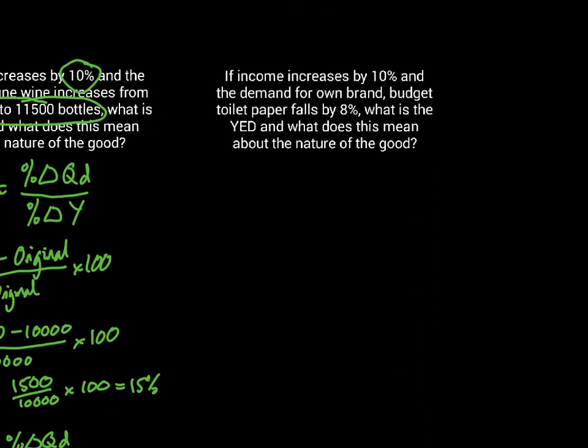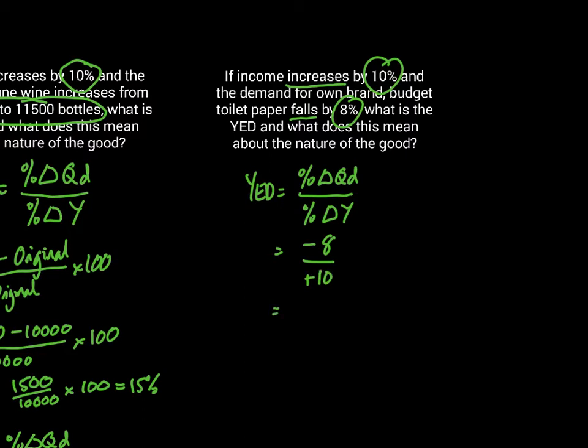Last one then. If income increases by 10% and demand for own brand budget toilet paper falls by 8%, what is the YED and what does this mean about the elasticity of the good? Same starting point. Percentage change in quantity divided by percentage change in income. Key thing here is that I've got one increasing and the other falling. So I have to represent that fall as a negative value. The demand is falling by 8, that's minus 8 on top, with a 10% income increase, that's plus 10 on the bottom, which means my YED is negative 0.8. The negative here is very important. You must remember to include the negative values and carry them through your calculation properly.